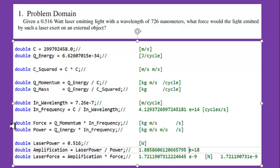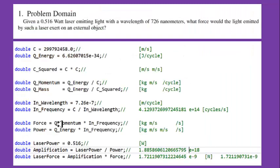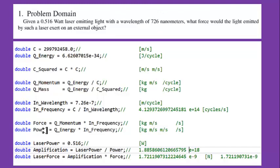Next we calculate the force and power of this frequency of light using the two equations from my specification — the power equation and the force equation. When I take that frequency and multiply it by the quantum of momentum, I get the force. When I take that frequency and multiply it by the quantum of energy, I get the power of that frequency of light. This is the force and power of the light before amplification — before laserization.